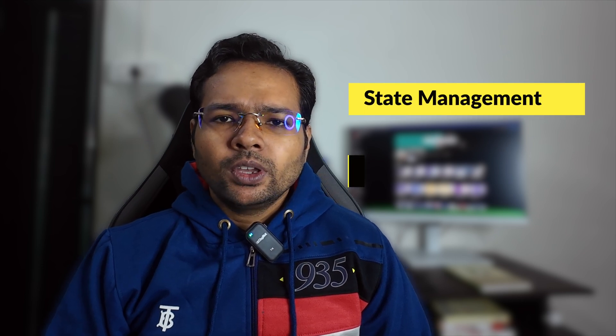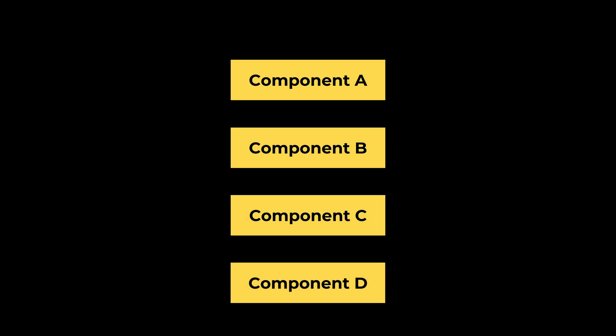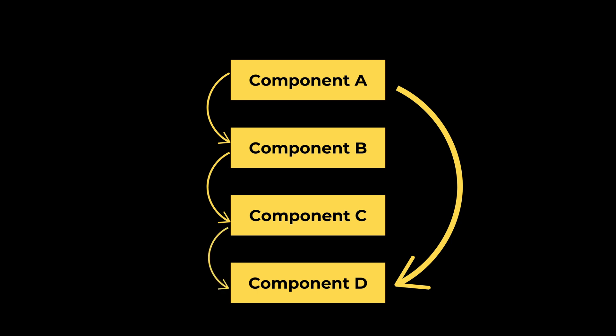Redux and the Context API are both used for managing state and passing data to any component in an app, which prevents prop drilling. Prop drilling is a concept where we need to pass data through props multiple layers down the component tree. For example, if we have four components A, B, C, and D, and only component D needs a state value, we still have to pass it through A, B, and C even though those middle components don't need it. This is called prop drilling.